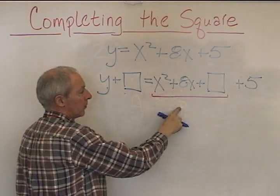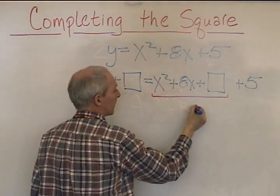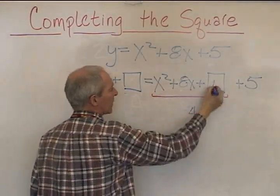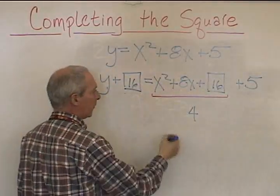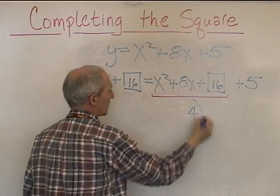Half of 8x, 4, 4 squared is 16, and 16 to both sides. There's no parentheses to influence this 16, so that's what it is on both sides.